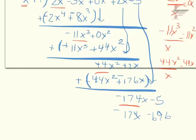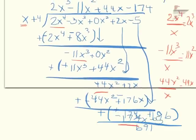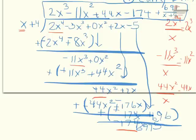Then I subtract all of that — change to plus and negate — so 696 minus 5 is 691. That is my remainder, so I write plus 691 divided by my divisor, x plus 4. That is your final answer.